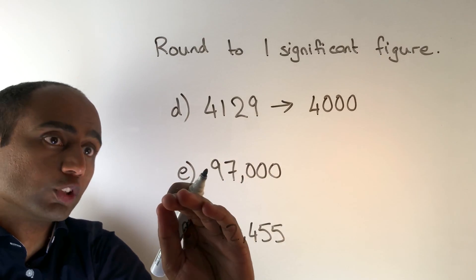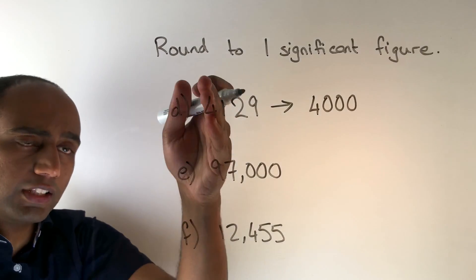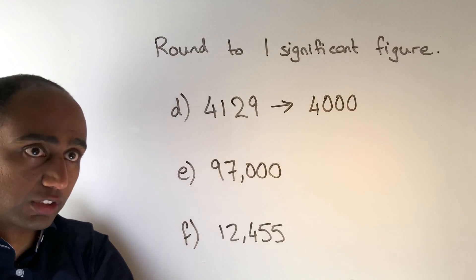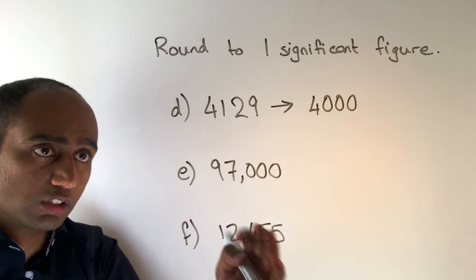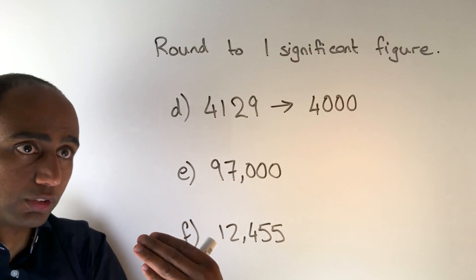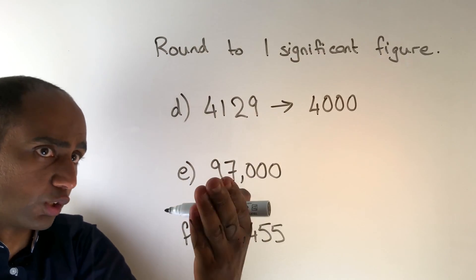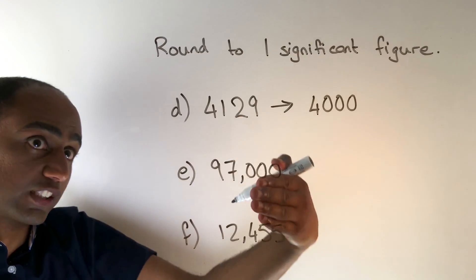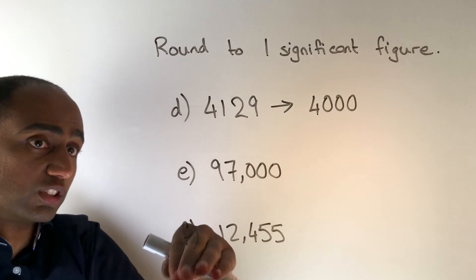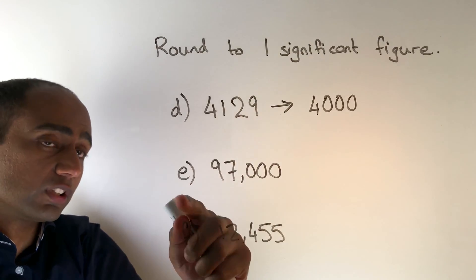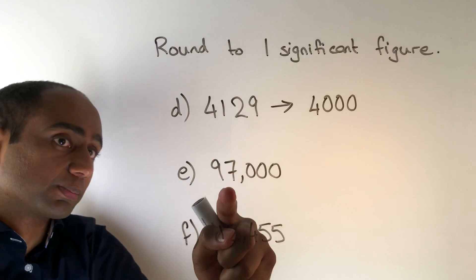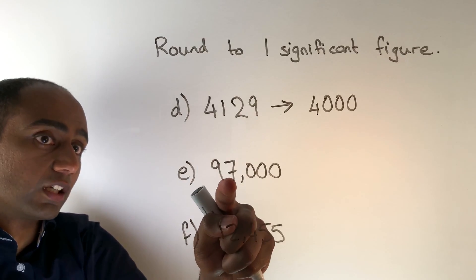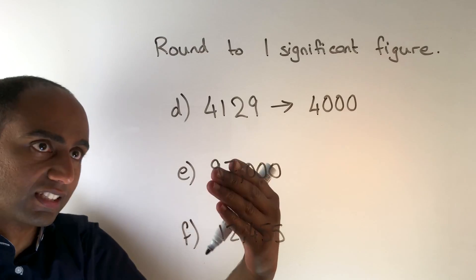In question E we've got 97,000. The biggest place value column here is the ten-thousands column, so we're looking to round to the nearest ten thousand. Is it closer to 90,000 or 100,000? It's actually closer to 100,000 and we round up because the next place value column along is a five or greater — in this case it's a seven.